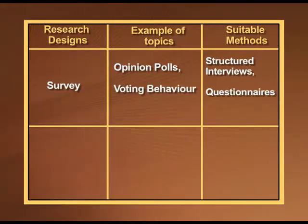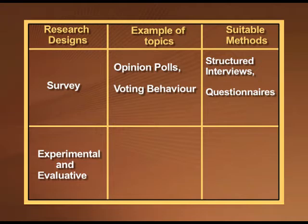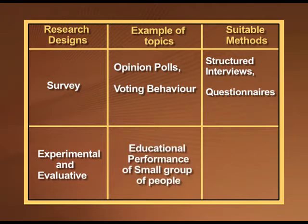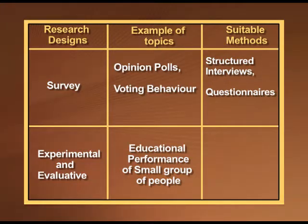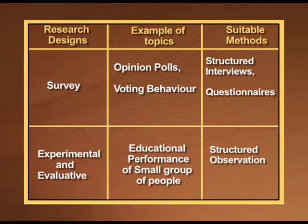The second research design is experimental and evaluative research. You can use this design to study the educational performance of a small group — for example, conducting experiments by changing variables such as giving educational support at one point and then extra support in the form of audio-visual materials versus plain classroom teaching, then observing the effect of these variables on students' performance in the process of learning. The suitable method for such a topic is structured observation, where you spend time observing these people.